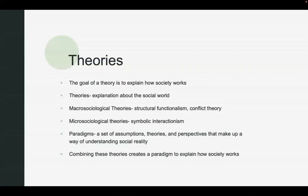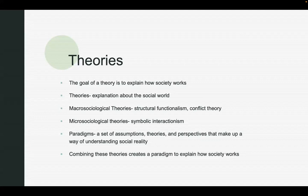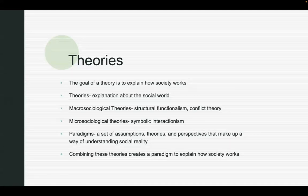We're going to talk about three theories to apply that. The goal of sociological theories is to explain how society works — that's the easiest way I can say it. We're talking about groups of people, society, the social concepts they create, how they interact, how they behave, and the institutions they construct. Theories are just trying to explain the social world, and there's not always just one answer. Sometimes we need multiple theories. A paradigm is a set of assumptions, theories, and perspectives that make up a way of understanding social reality.